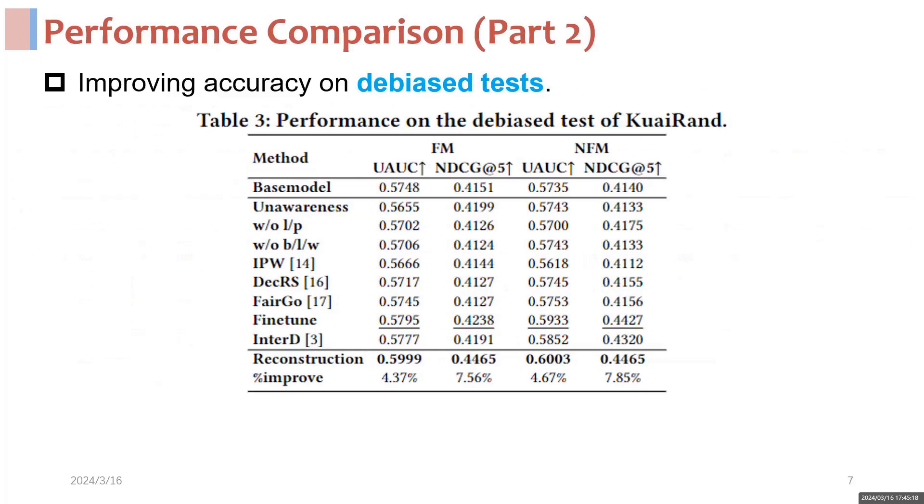On debiased tests, our linear weight reduction algorithm achieves the best performance, validating the effectiveness of using estimated positive sample ratios to construct new linear weights.